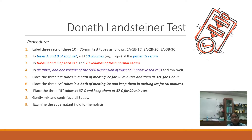The procedure is slightly tedious but simple. You need three sets of test tubes, each set having three tubes: Set 1 (1a, 1b, 1c), Set 2 (2a, 2b, 2c), and Set 3 (3a, 3b, 3c). To tubes A and B of each set, add 10 volumes of patient serum. To tubes B and C of each set, add 10 volumes of fresh normal serum. So tube B in each set has both patient serum and normal serum. Then to all tubes add one volume of 50% suspension of washed P-positive red cells and mix properly.